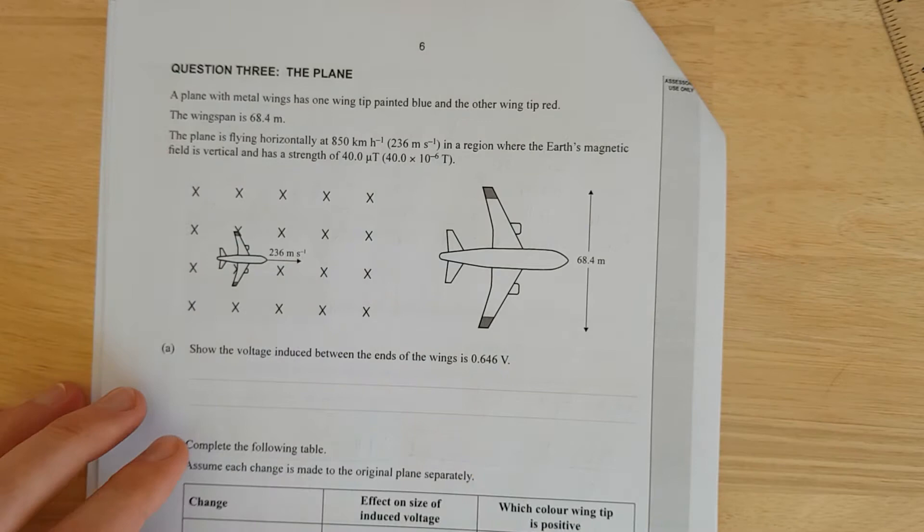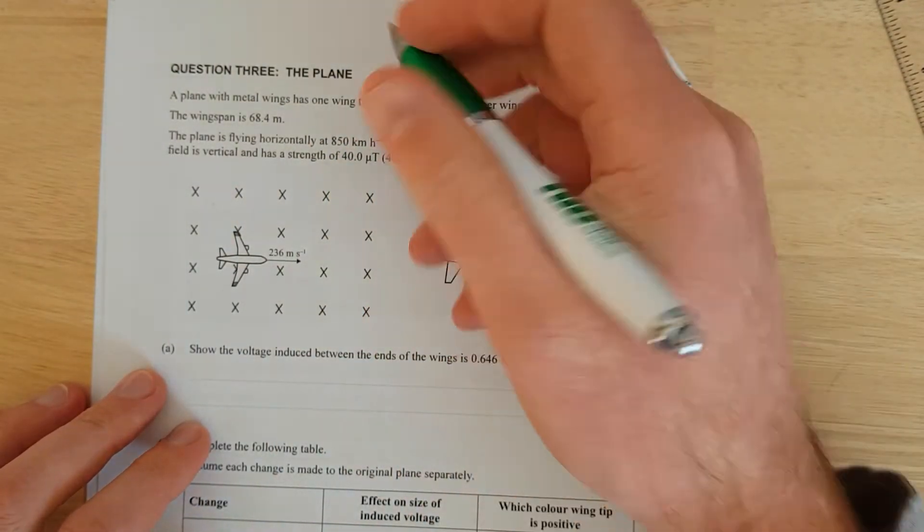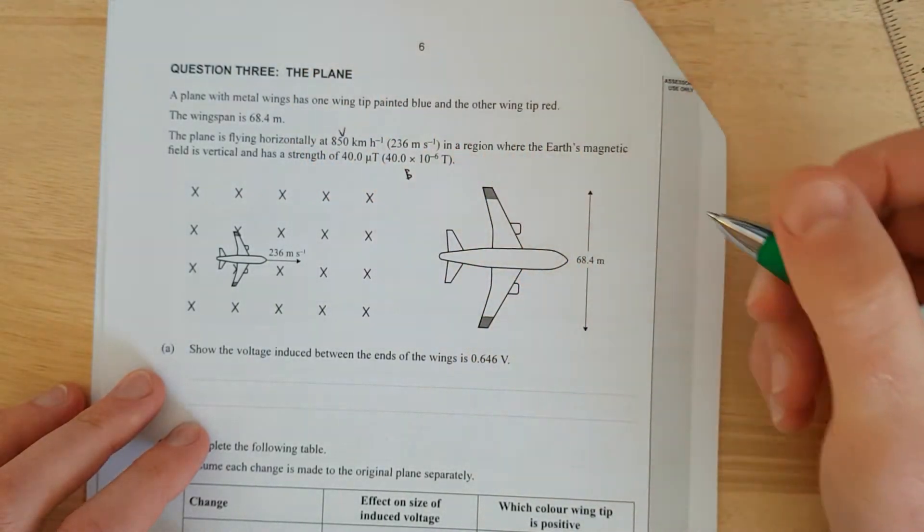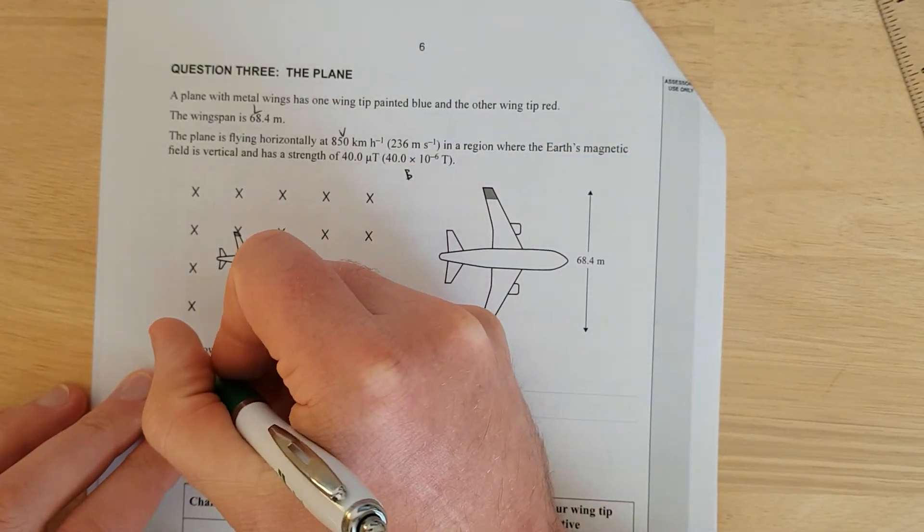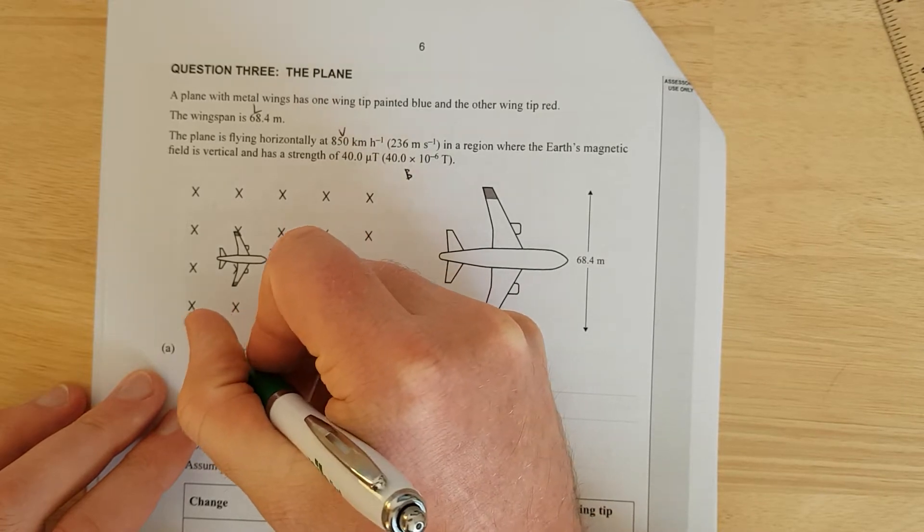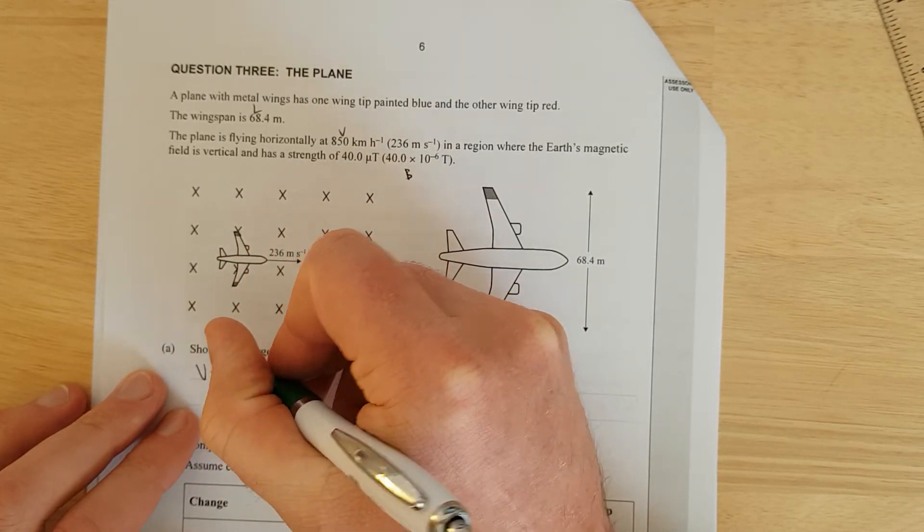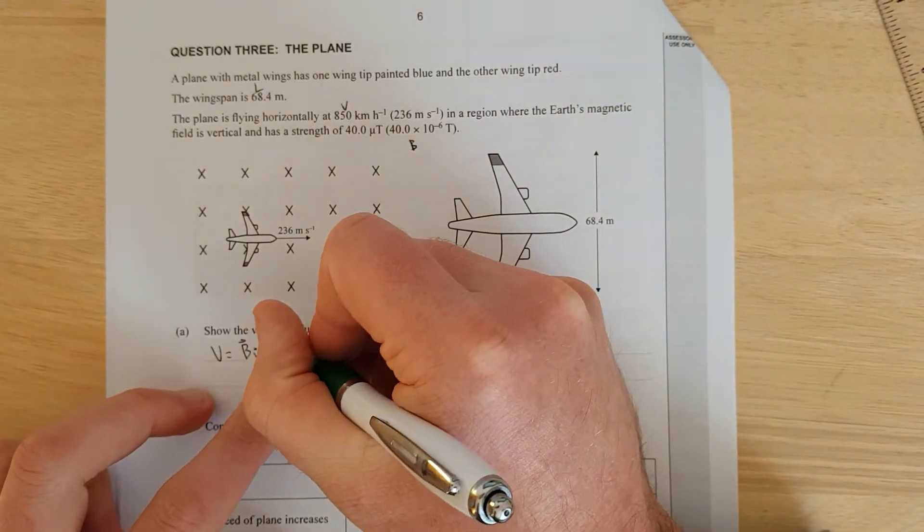We need to show the voltage induced in the wings is 6.46. So we have the magnetic field B, the velocity v, and the length cutting through. The only formula that has those is V equals BvL.